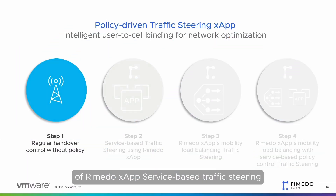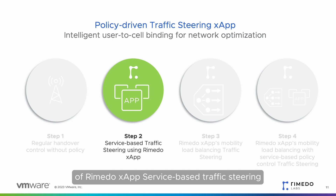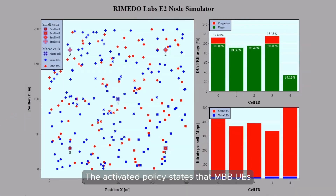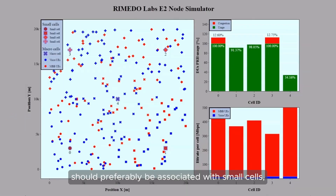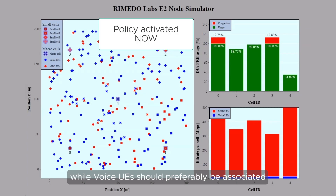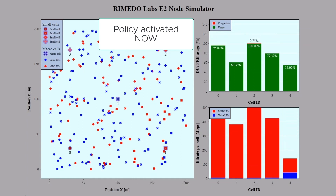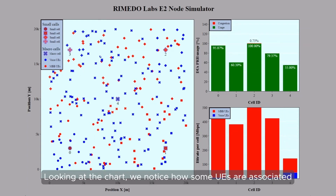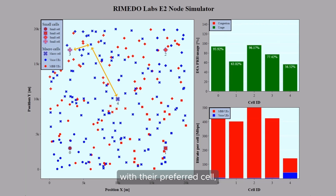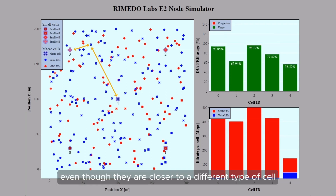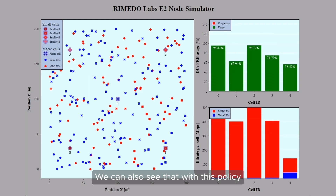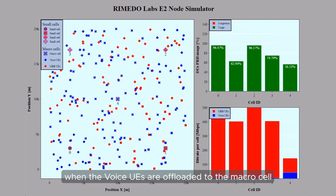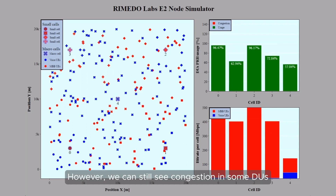Now let's see the effect of Remedo X-App service-based traffic steering. The activated policy states that MBB UEs should preferably be associated with small cells, while voice UEs should preferably be associated with a macro cell. Looking at the chart, we notice how some UEs are associated with their preferred cell, even though they are closer to a different type of cell. We can also see that with this policy, we remove some congestion from the small cells when voice UEs are offloaded to the macro cell. However, we can still see congestion in some DUs.